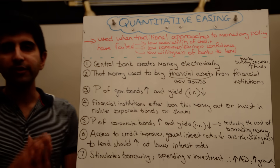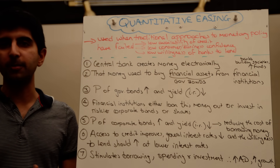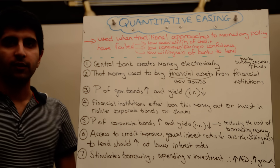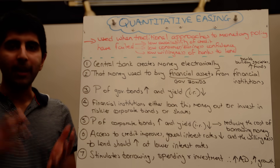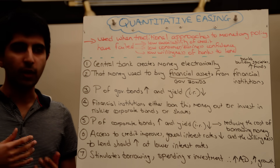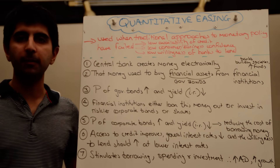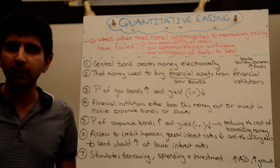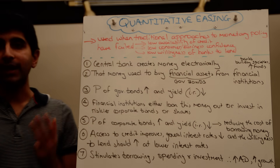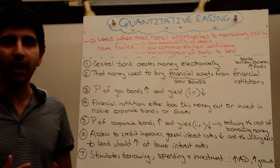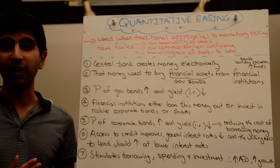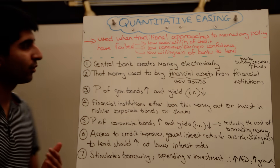Basically, QE is used when traditional approaches to monetary policy have failed in achieving their objective. So your basic idea of lowering interest rates to stimulate aggregate demand, to increase consumption and investment, have failed in the traditional sense. And in the UK, when it came to the Great Recession in 2009, reducing interest rates to 0.5% failed for three main reasons.